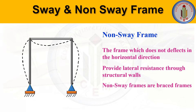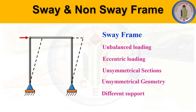A non-sway frame is a frame that does not deflect in the horizontal direction. To avoid horizontal deflection when the frame is subjected to horizontal loads, we provide proper bracings to resist those loads. This type of non-sway frame provides lateral resistance through structural walls, such as shear walls. Non-sway frames are braced frames.